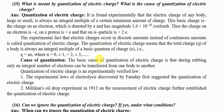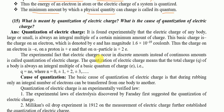जब integral multiple की यहाँ बात करते हैं तो simply हमारा magnitude fix है। जैसे जैसे particle change होते जाएंगे — for example, alpha particle के अंदर two electrons हैं, तो two electrons का value यहाँ multiply होगा। Basic quantum define करेंगे तो value होगी 1, 2, 3 — it cannot be 1.5, 2.5, or 3.5। Clear with this.